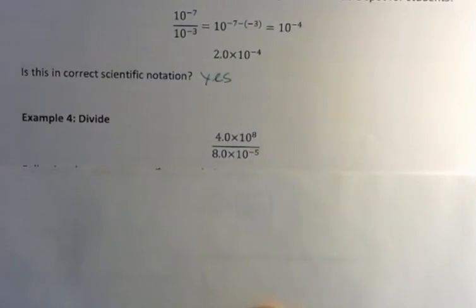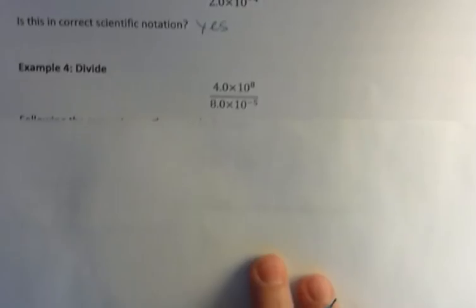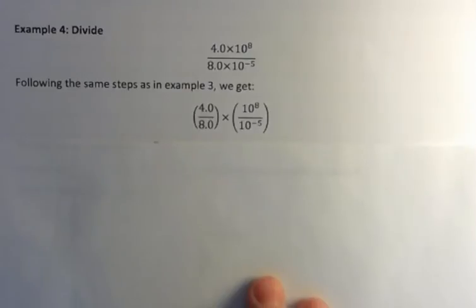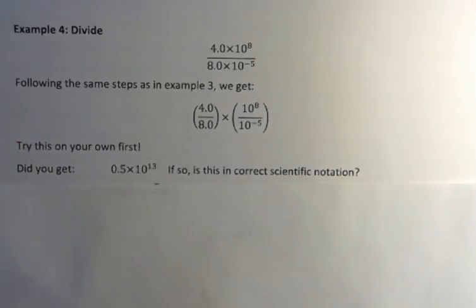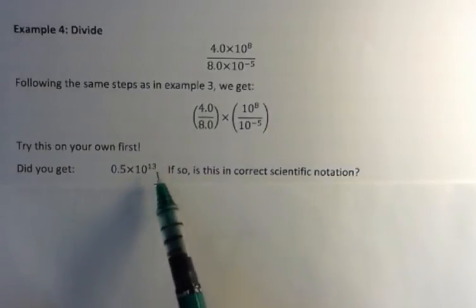All right, what about this one? We can do the same thing using the same method from example 3, so we're going to rewrite that as thinking about the numbers, and then the powers of 10. You might want to try this one on your own and see what you get. Final answer all the way through, then come back and check. Well, maybe you got 0.5, because 4 over 8 is 0.5, and then 10 to the 13th.